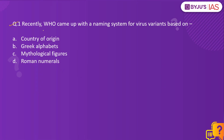The first question: Recently, the World Health Organization has come up with a naming system for virus variants based on — country of origin, Greek alphabets, mythological figures, or Roman numerals. The correct answer is option B. For naming the different variants of concern and variants of interest of the SARS coronavirus 2, the WHO has come up with a naming system based on Greek alphabets.